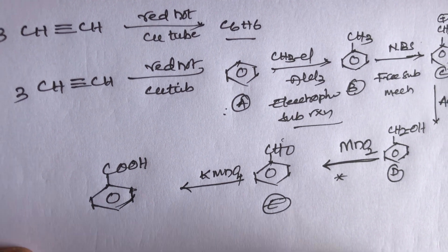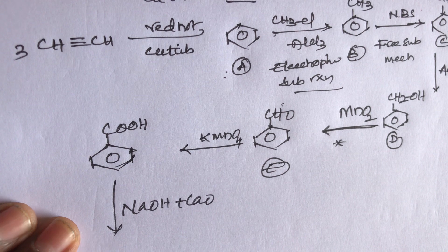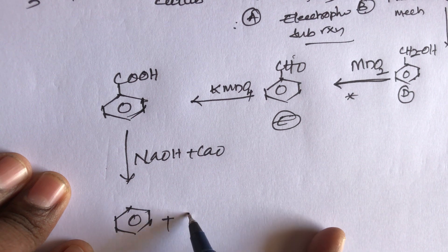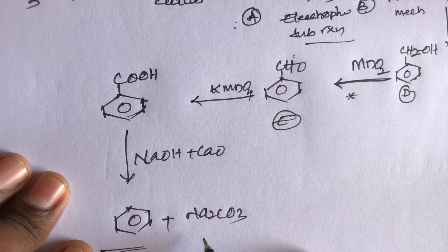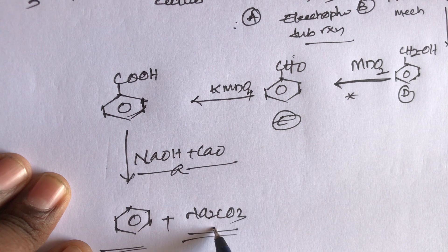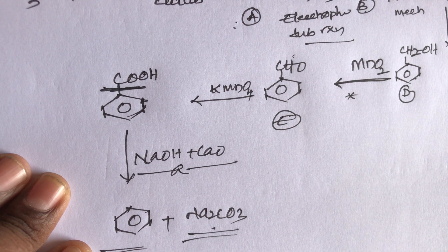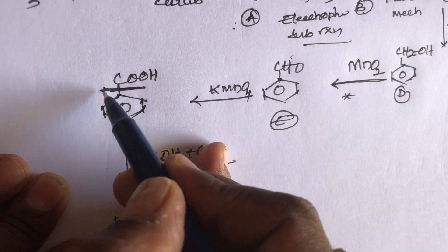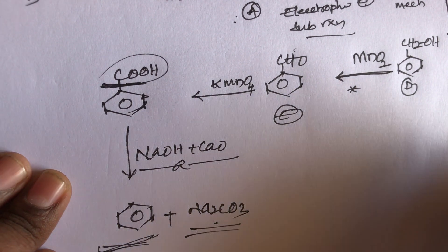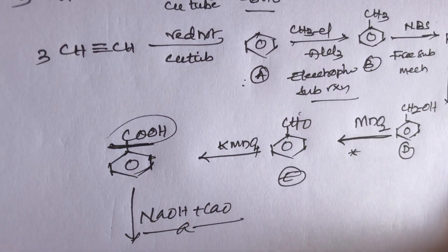This benzoic acid reacts with soda lime — NaOH plus CaO — and benzene will be formed plus Na₂CO₃. There is bond cleavage: Na₂CO₃ is formed and a hydrogen attacks this position. This is bond cleavage — removal of carbon dioxide — called decarboxylation reaction. Finally, benzene will be formed. This is the simple conversion from alkyne to aromatic hydrocarbons.